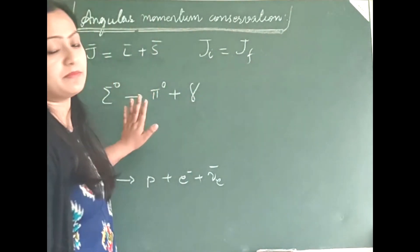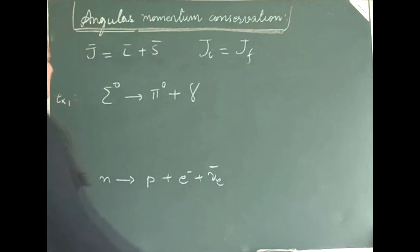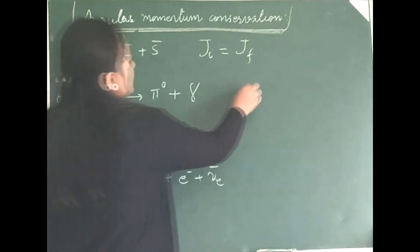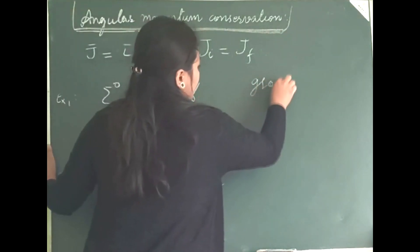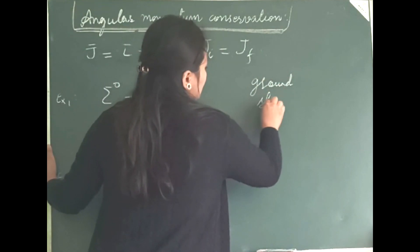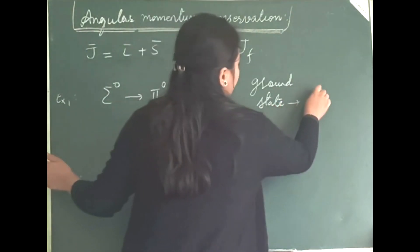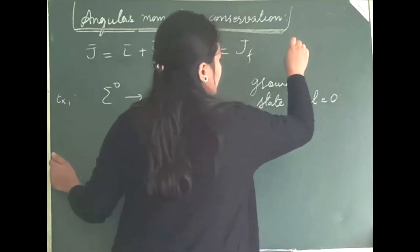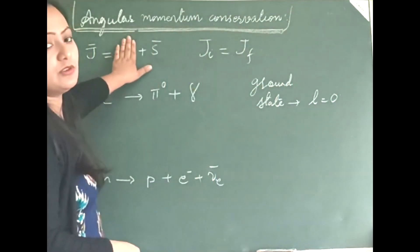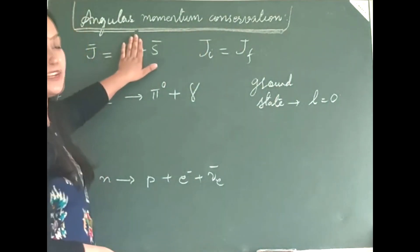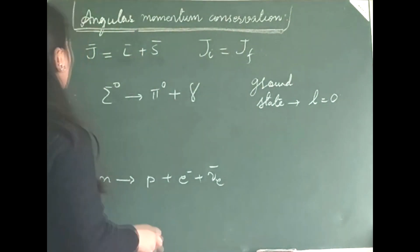Now let us look into the examples. We will be considering the ground state, meaning we will be considering L equals to 0 state. So if I consider L equals to 0 here, then it becomes J is equals to S.